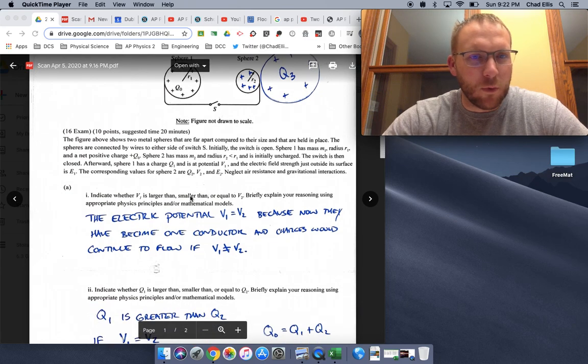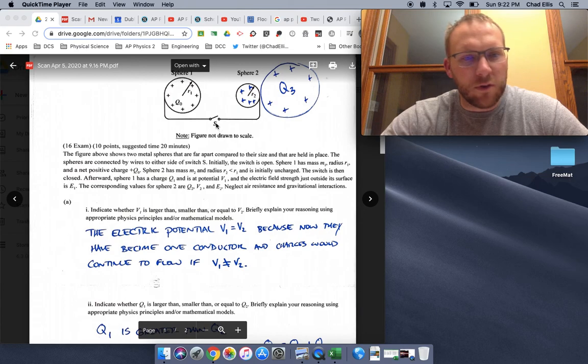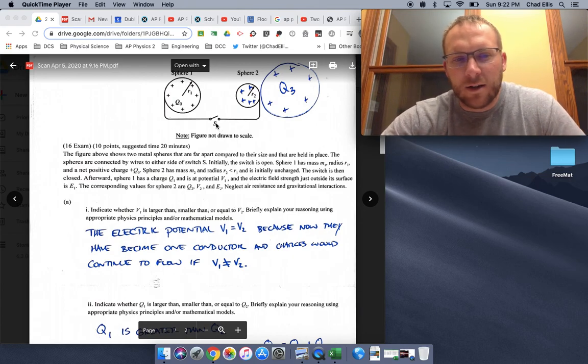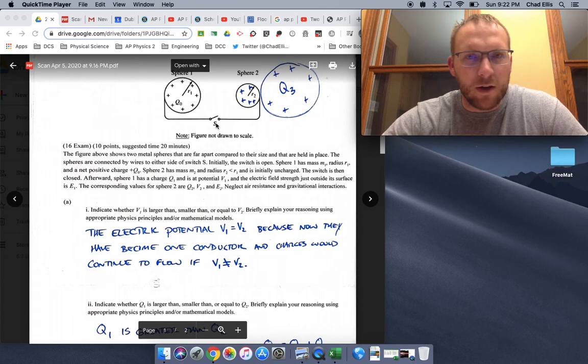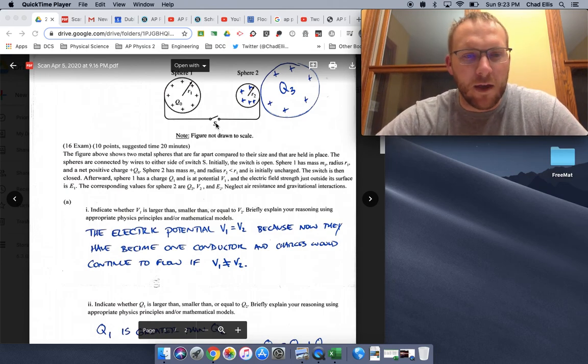So basically what the question asks you is the switch is now closed. It first wants you to compare the electric potential. This is a pretty classic AP physics problem. And if we can get the idea that their potential should be the same, then everything else should fall into place based off of that.